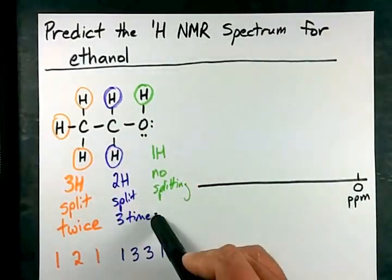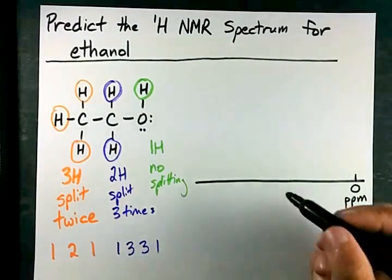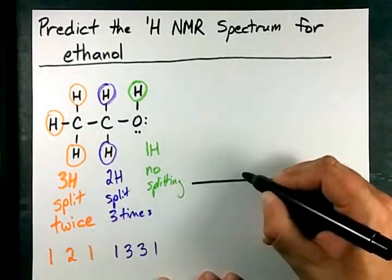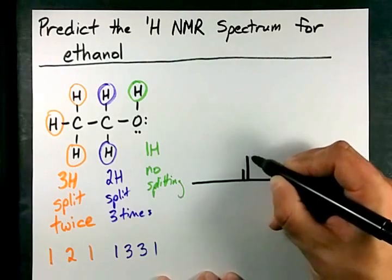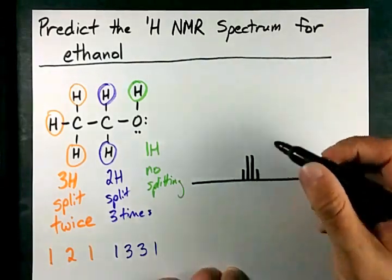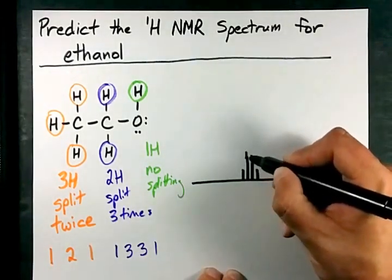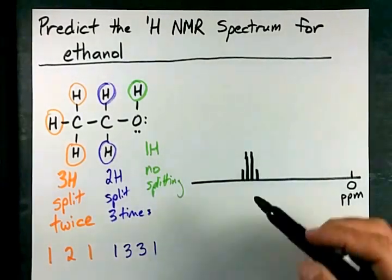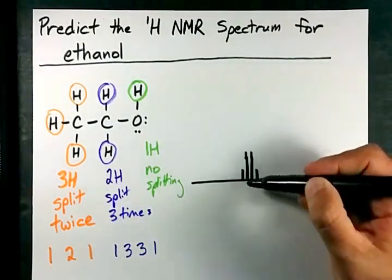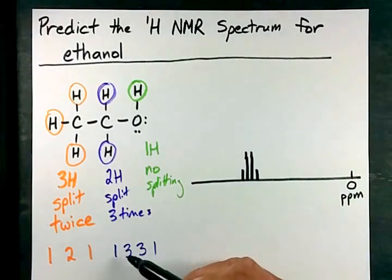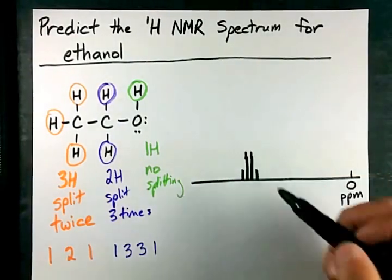We have two hydrogens split three times into a one-three-three-one pattern. So I'm just going to arbitrarily draw some peaks here. One-three-three-one, where I make sure that the heights of my peaks correspond to this. I'm trying to make my middle two peaks obviously the same height as each other, and three times bigger than my end peaks.